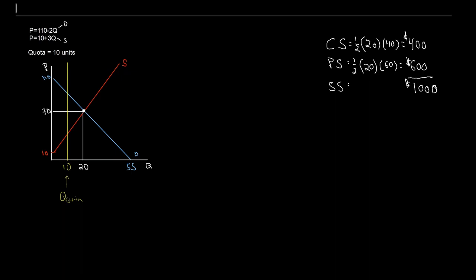At this quantity, we're going to have two things result. We're going to have 10 up to my supply curve — that's going to give me my minimum willingness to accept, the lowest price that our producers would be willing to accept in order to produce 10 units. We can also think of this as marginal cost, that is the extra cost to produce that 10th unit. We also have, if we take this 10 all the way up to our demand curve and bring it across, our maximum willingness to pay — the most consumers would be willing to pay to buy 10 units, which can also be thought of as the marginal benefit received from consuming that 10th unit.